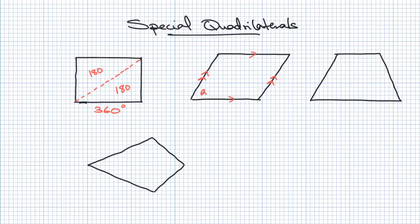So this angle would be the same as that angle here. When I say opposite I mean along the diagonal, so please be sure about that. It also means that this angle here and that angle here are also the same, and that's a special thing about a parallelogram that you need to be aware of.